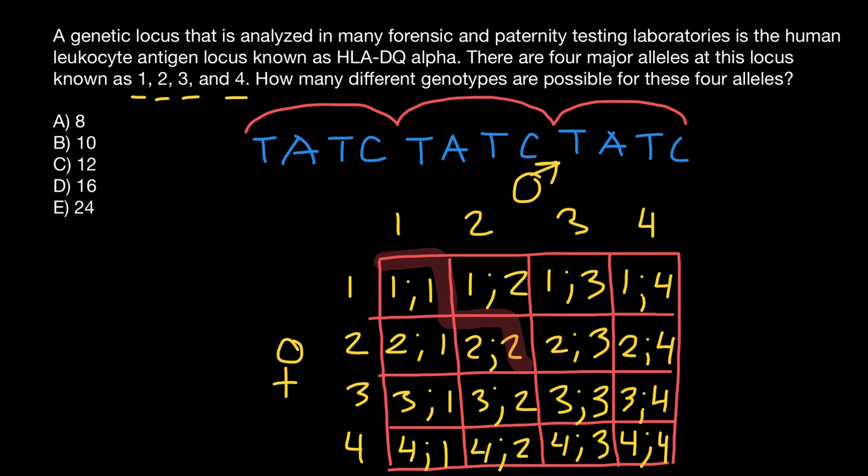Now, these combinations on this diagonal would happen only once. But combinations, for example, in this cell and in this cell happens twice. And this combination and this combination is the same. For example, if you are going to run a gel, you're going to get one band with two repeats and one band with one repeat. This seems like it's a different genotype. But also you're going to get one band with one repeat and another band with two repeats. So they're going to be on the gel the same, would be identical.